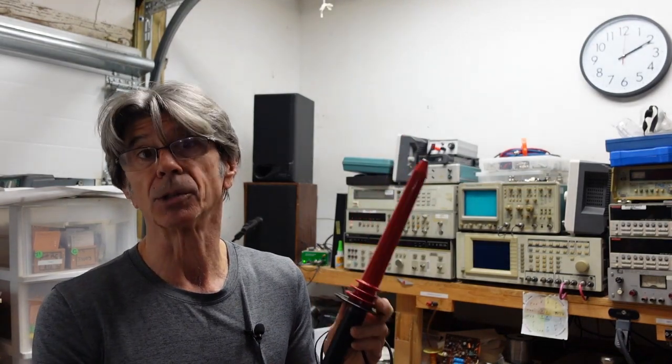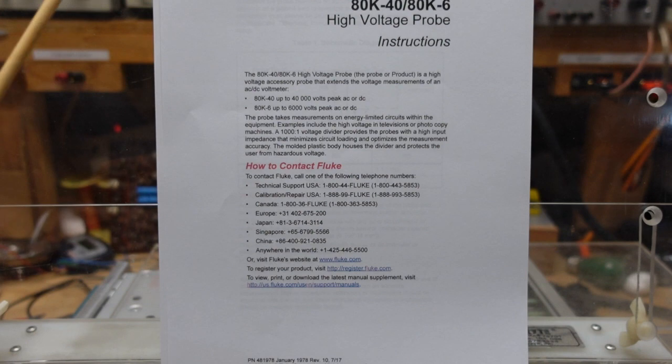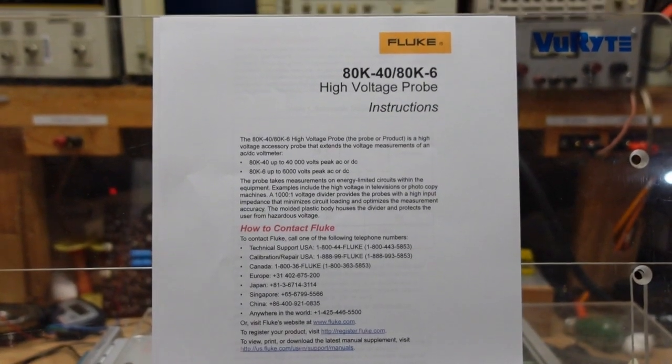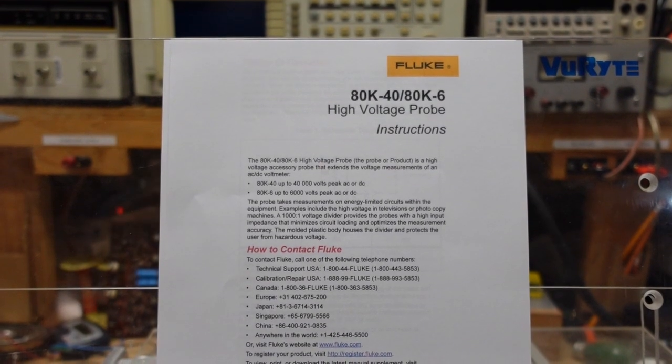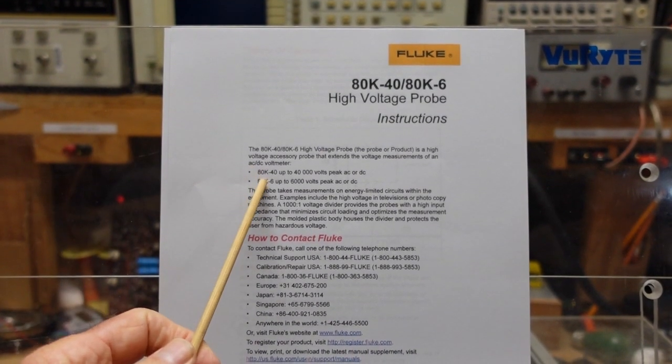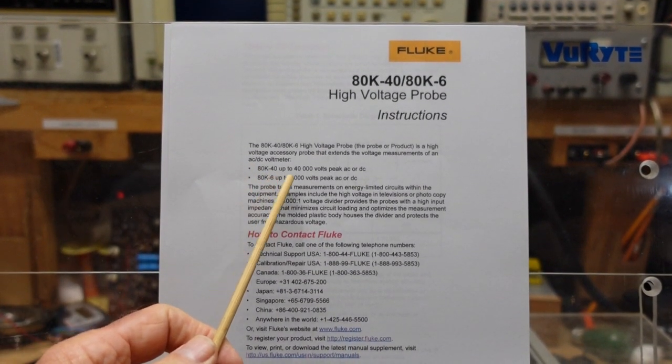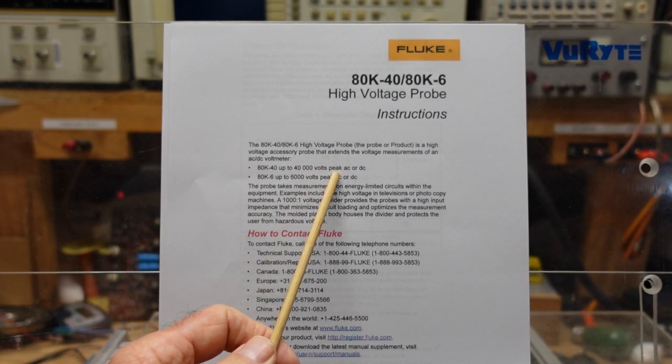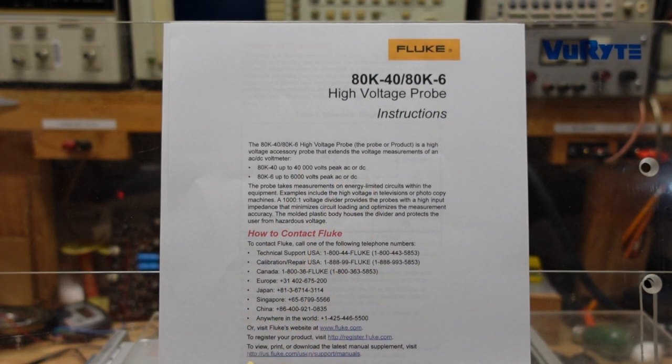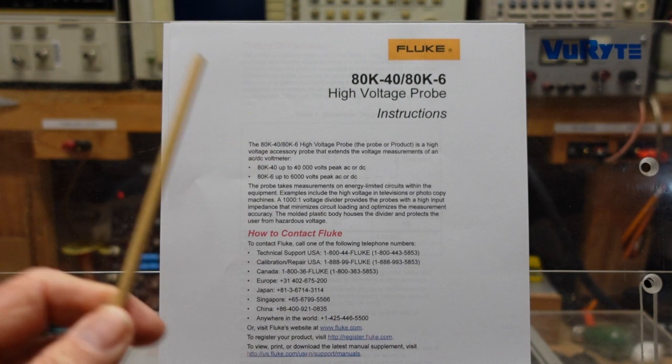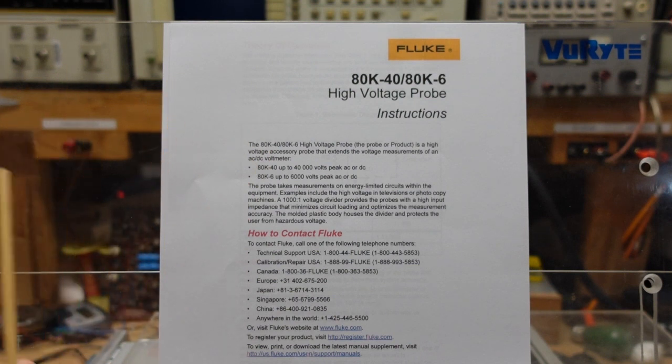Here is the manual for the Fluke 80K, and you can see here it tells us that our 80K-40 is good up to 40,000 volts peak AC or DC.